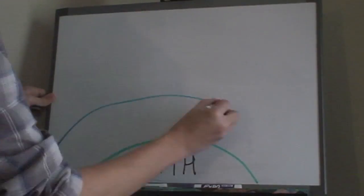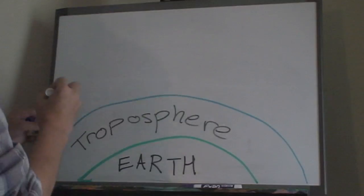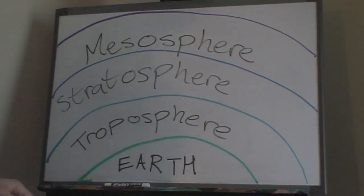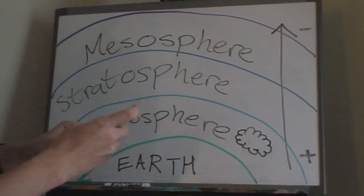The atmosphere is made up of three layers: the troposphere, the stratosphere, and the mesosphere. Atmospheric pressure decreases as altitude increases. Weather only occurs in the troposphere.